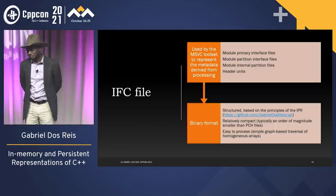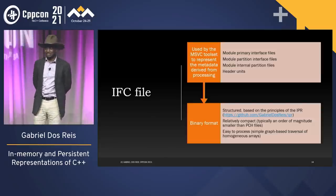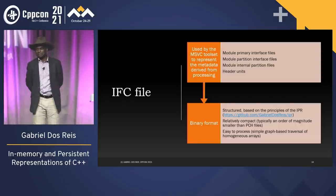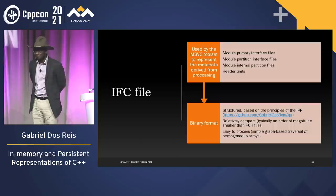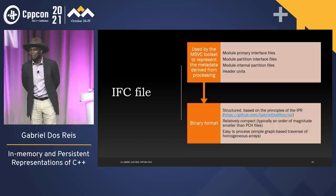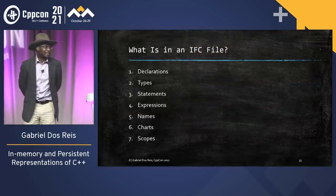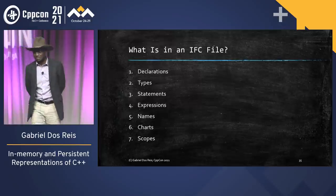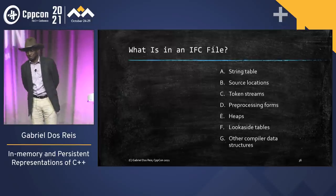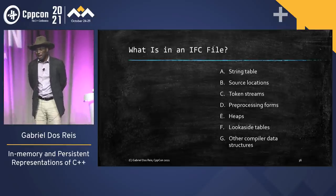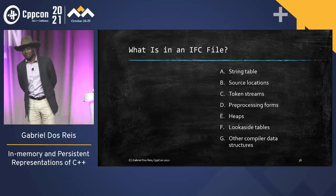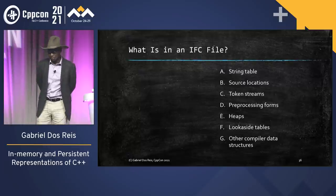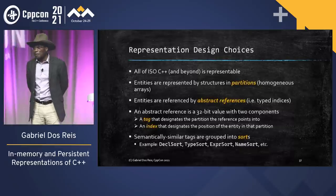What do you find in an IFC file? Descriptions of declarations, types, statements — everything you need in a C++ source file. You have string tables, source locations, and a lot more. You also have pre-processing forms because if you're doing header units, you need to bring in macros too. Again, just like the IPR, you ought to be able to represent all of C++. But I'm talking about on-disk representation, and I don't have a vtable to help me dispatch. I have to represent heterogeneous data in a way that is well-structured and simple to navigate.